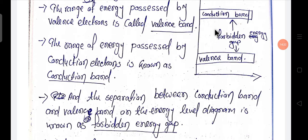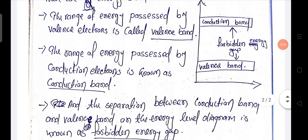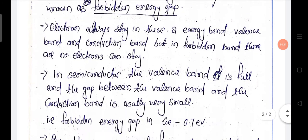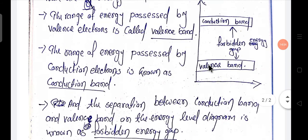For silicon, this forbidden gap is about 1.2 eV, and in the case of germanium, this forbidden gap is 0.7 eV. This forbidden gap is a very small energy gap, so the valence electron, when energized by any external force applied, can easily jump to the conduction band.